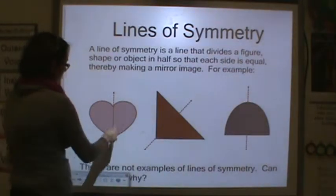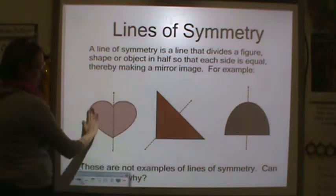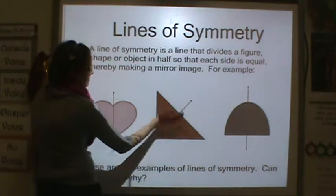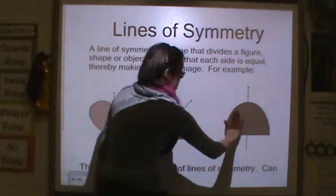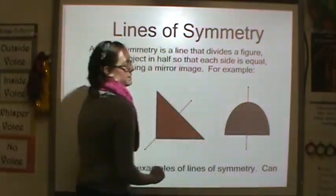Here's an example of a heart. If I were to fold this heart in half, it would lay over itself exactly. Same with this triangle here, and this looks kind of like a mountain or a semicircle.